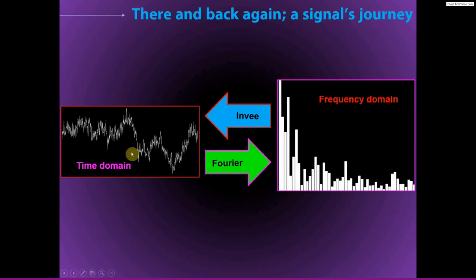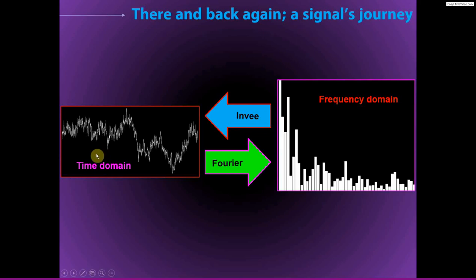This is very powerful because we can go from the time domain to the frequency domain and back. In EEG data analysis — particularly time-frequency based analyses — this is very powerful because many analyses can be done much more efficiently in the frequency domain. For example, with filtering and convolution, which are main ways we perform time-frequency decomposition, it's actually faster to take time domain signals, put them into the frequency domain, do the analyses there, and then go back to the time domain.